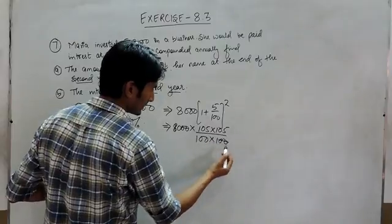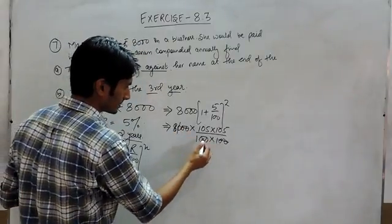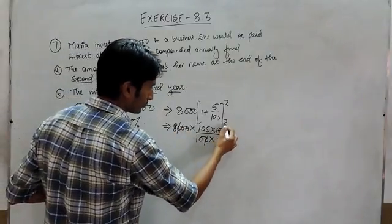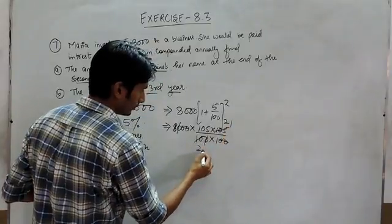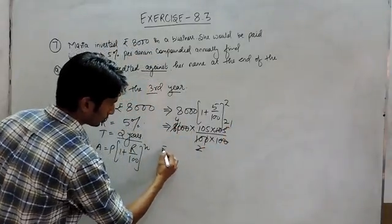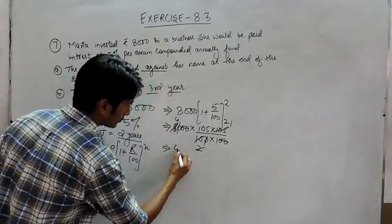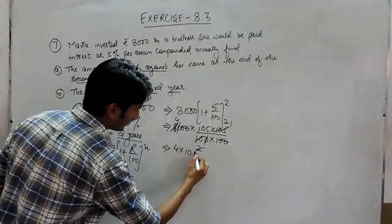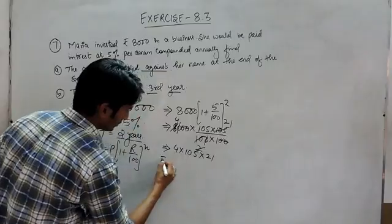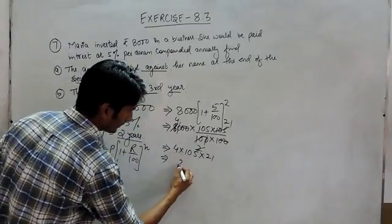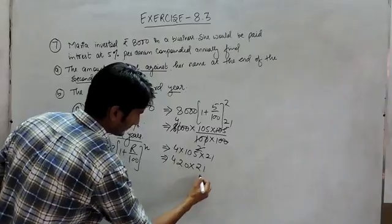Following this, this cancels with this, this cancels with this. 5, 21, 5, 2 and this is 4 times. So when this is solved, this is 4 into 105 into 21, so this can be multiplied into 21.